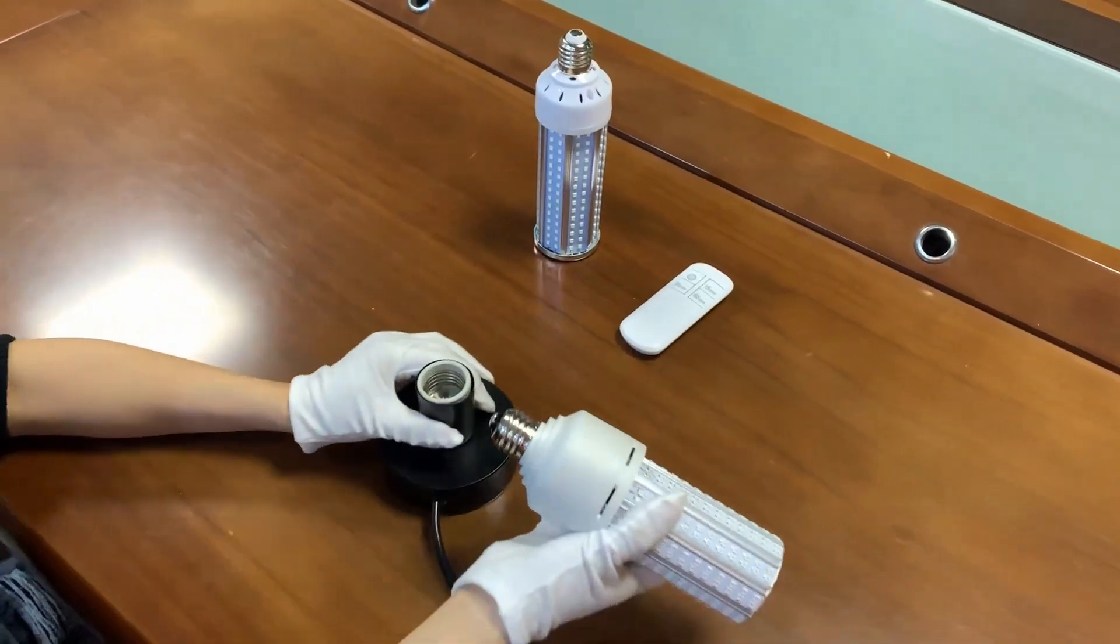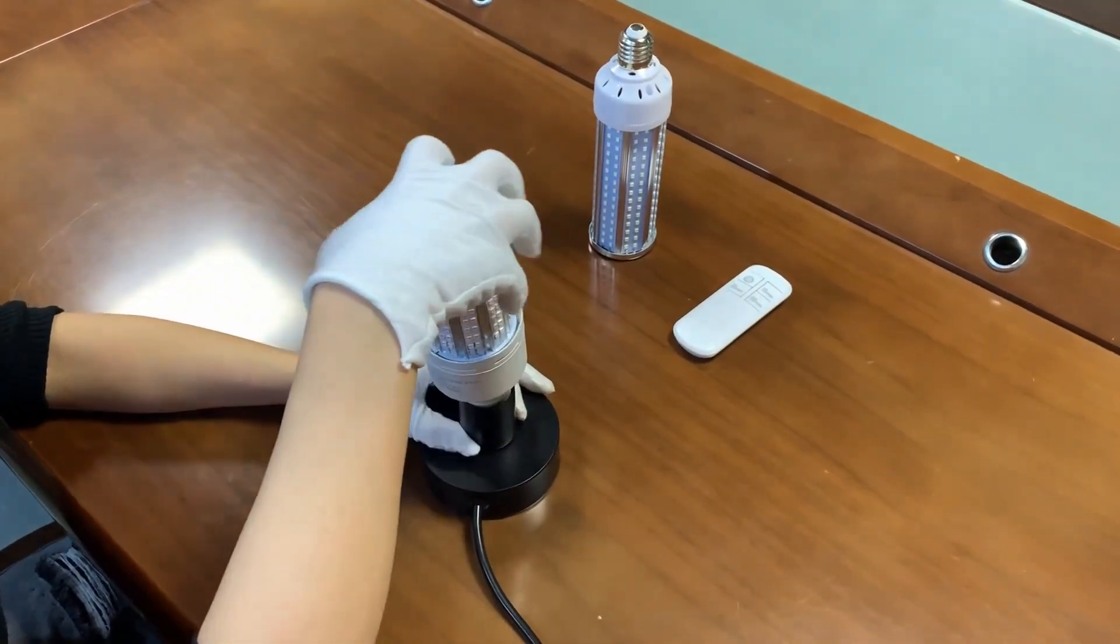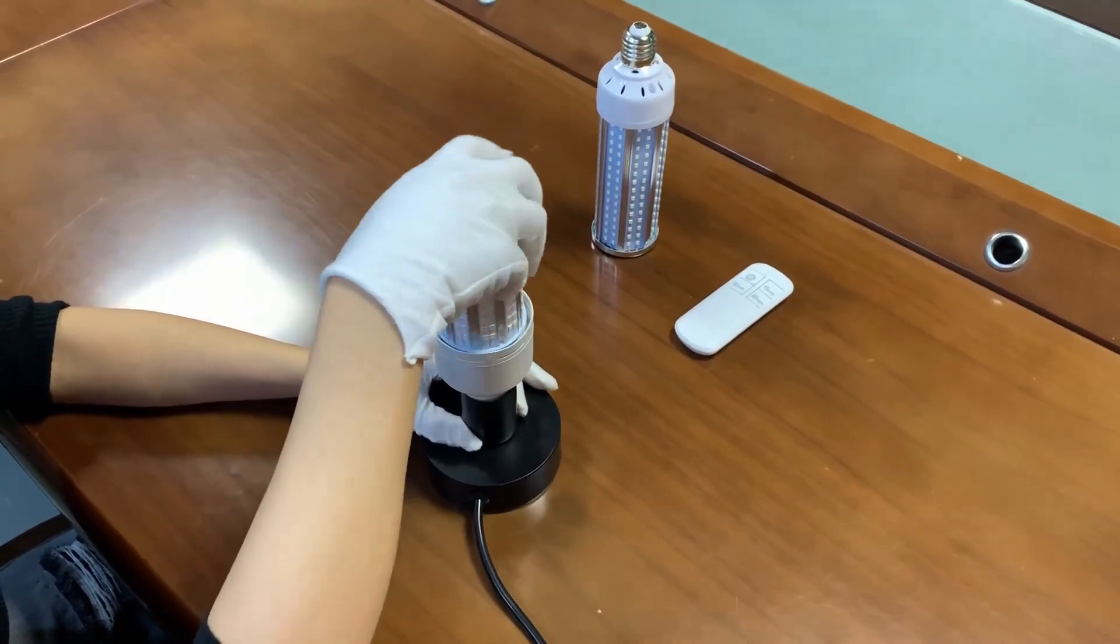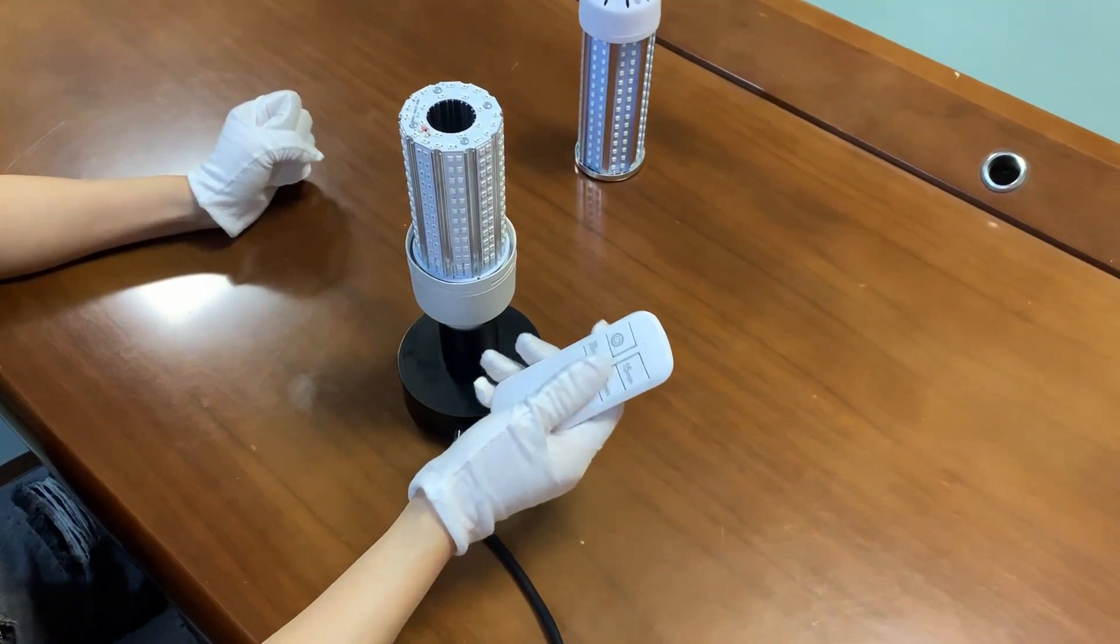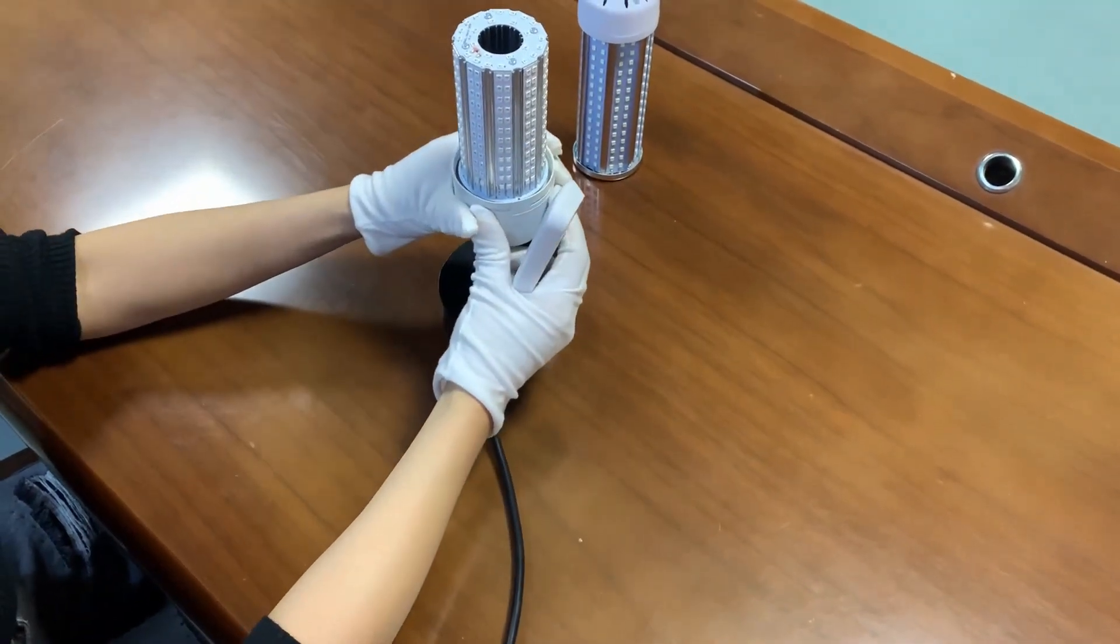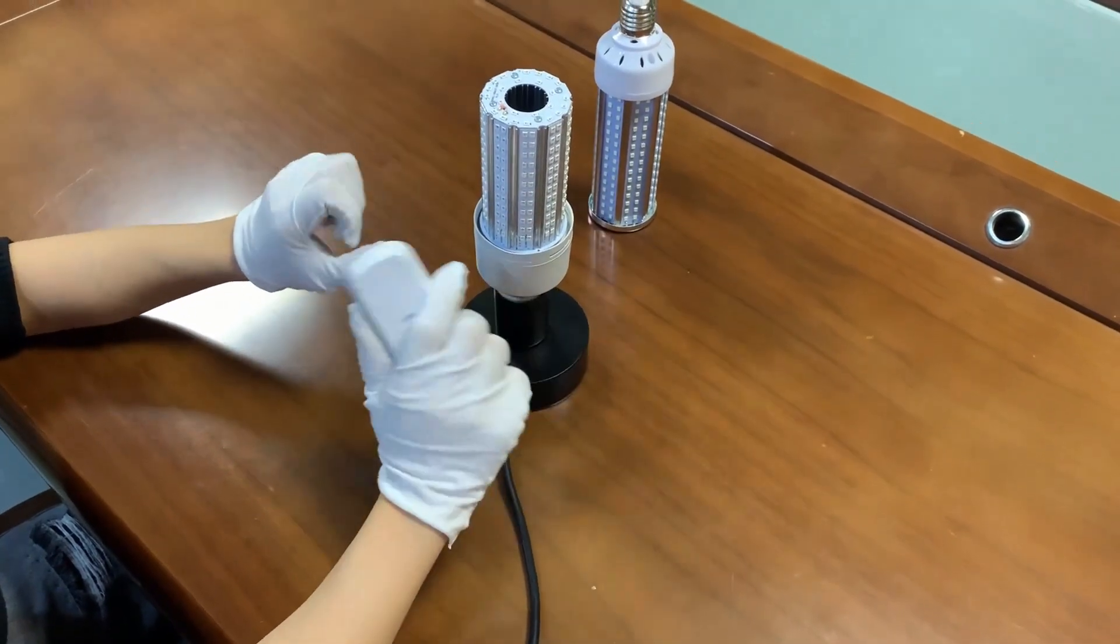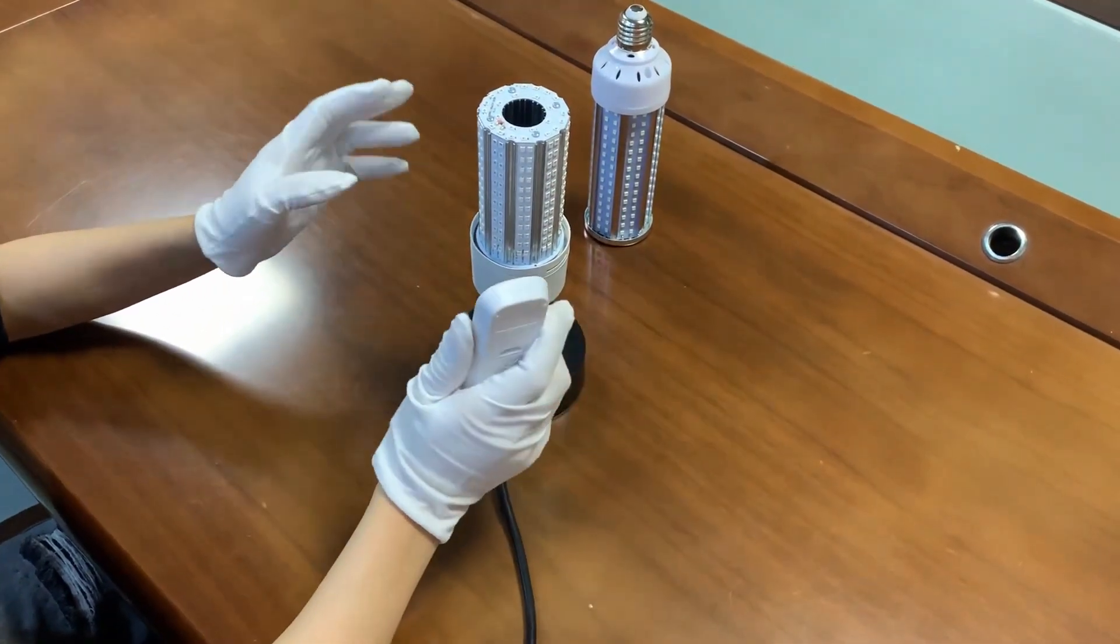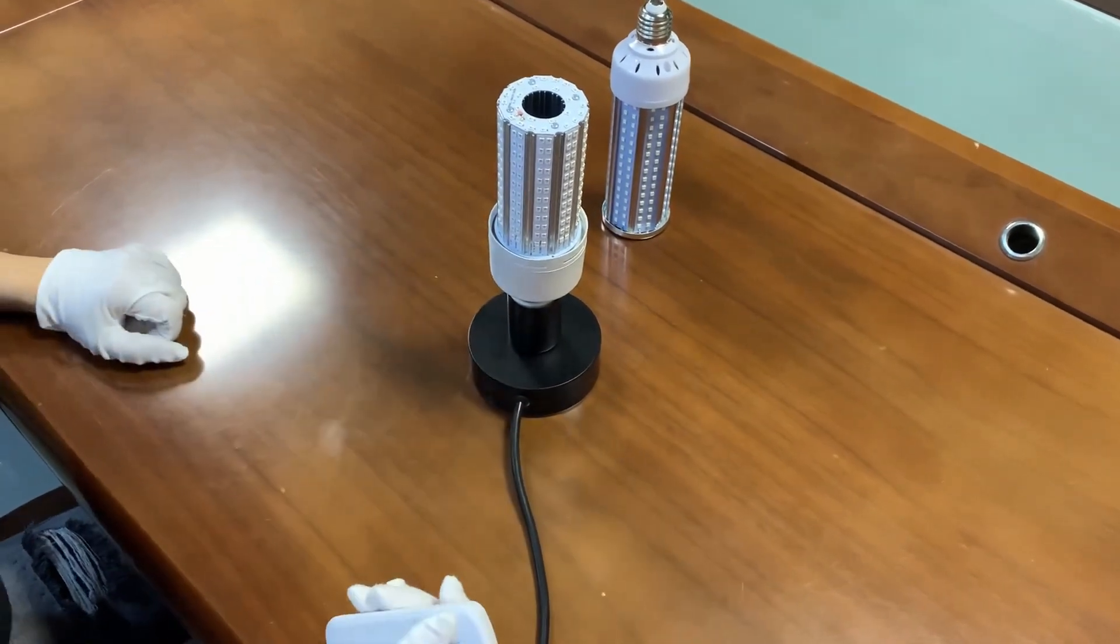It's very easy installation. Just put in the UVC bulb. And yeah, it has the remote control. Because this UVC is harmful to the human body, so we cannot use it when we are in the room. So it's better to use the remote control to operate.